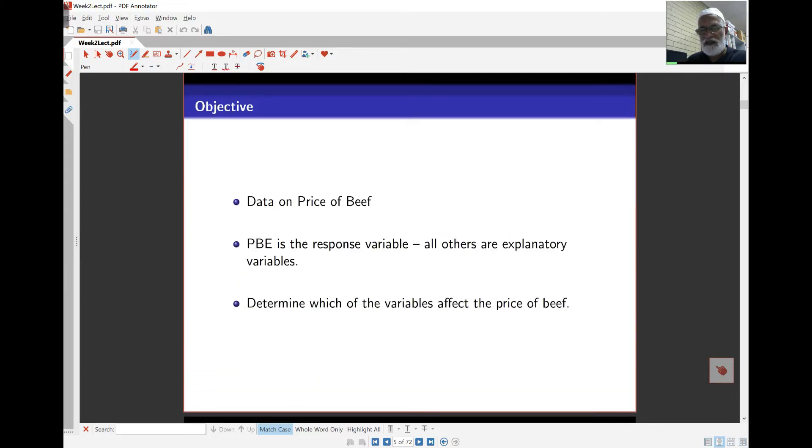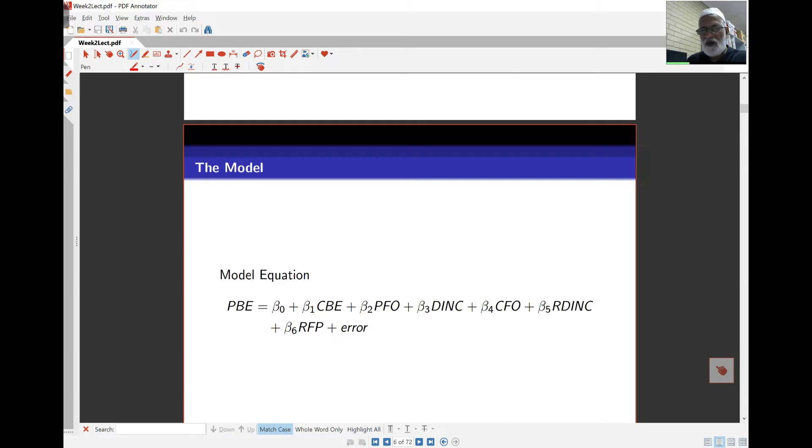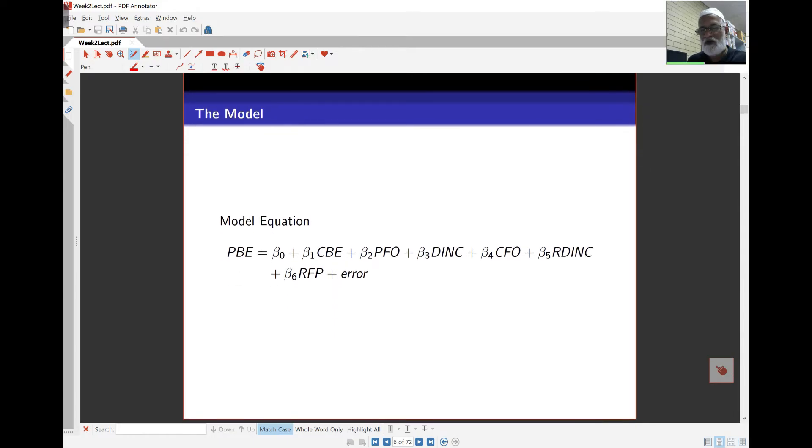PBE, the price of beef here, is the response variable. The others are all explanatory variables. And the idea is to find out which variables are affecting the price of beef. So here is the model. PBE is beta naught, which is the intercept term. Previously we had only one explanatory variable. Now we put all of these here. So beta 1 is the coefficient for CBE and so on and so forth. And finally, of course, we also have the error term here.